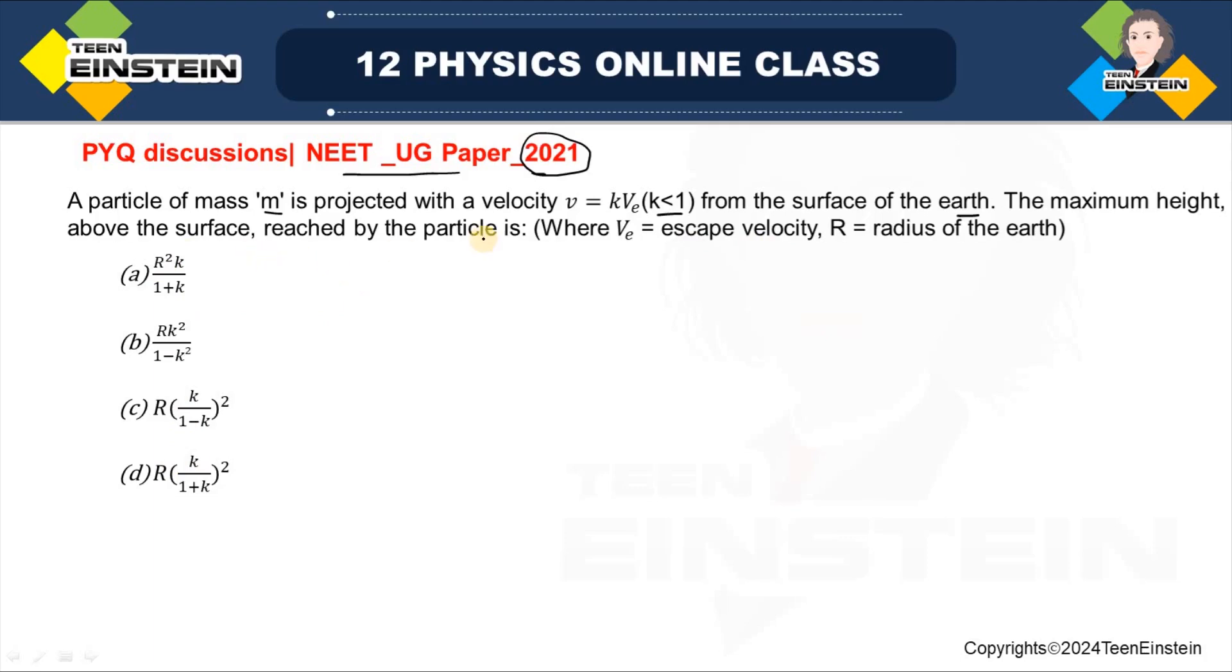The maximum height above the surface reached by the particle is given by one of these options. We have to find out the correct one where VE is escape velocity and R is the radius of the Earth.